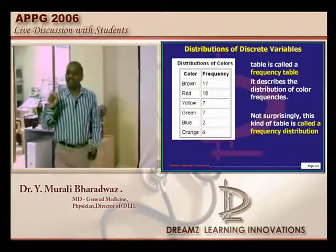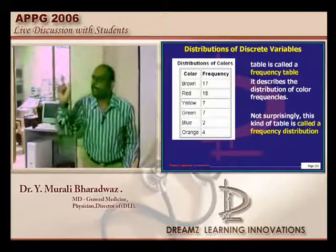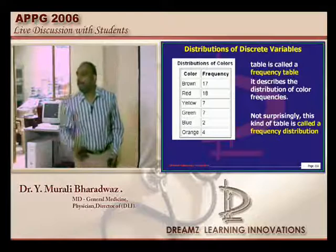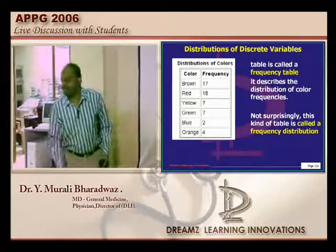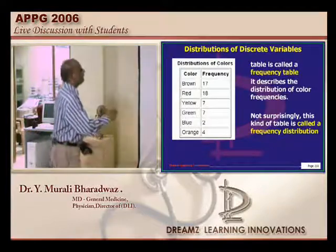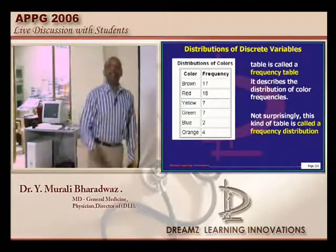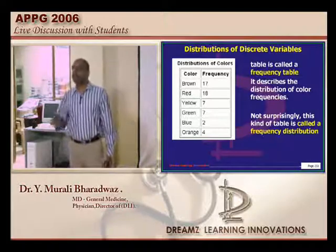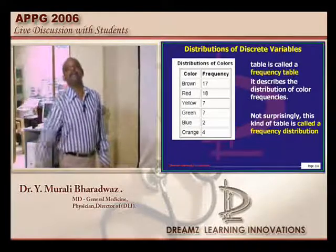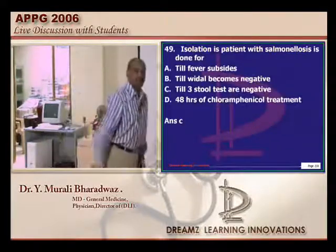For continuous variables, you find the range — for example, 30 to 35 years: how many people are there? 35 to 40: how many? For every range you identify the frequency, plot the midpoint of each range, and you get what is called a histogram. So histogram is used for continuous variables, whereas the bar diagram is used for discrete variables.